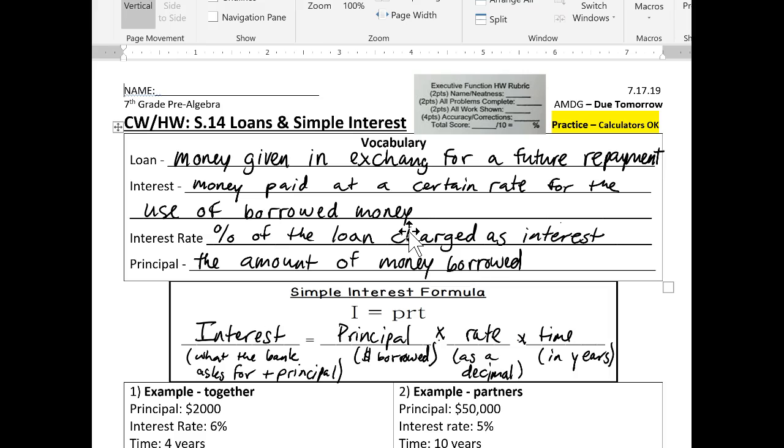Interest is money paid at a certain rate for the use of borrowed money. So just because I can give you the money at that time, you're not only going to give me back that money, but you're going to give me back that money plus interest. That's the convenience of me having the money that you need at that moment. An interest rate is a percent of the loan charged as interest. And the principal is the amount of money borrowed. So make sure you get those definitions down because that's how we're going to be talking about these different aspects throughout the rest of class.